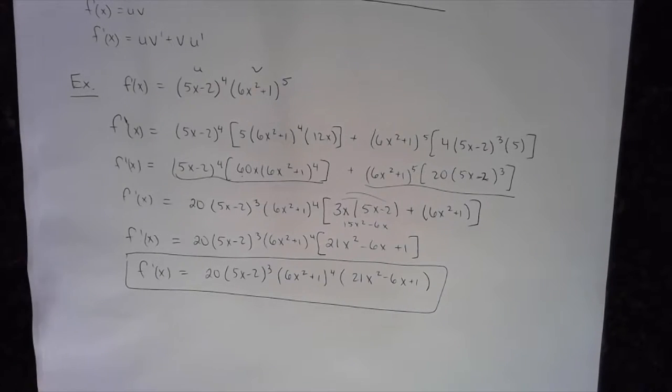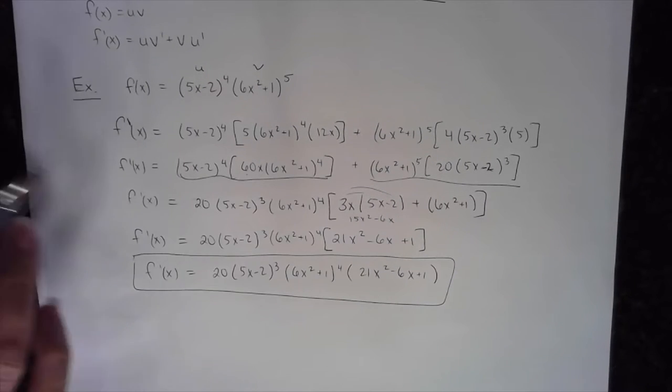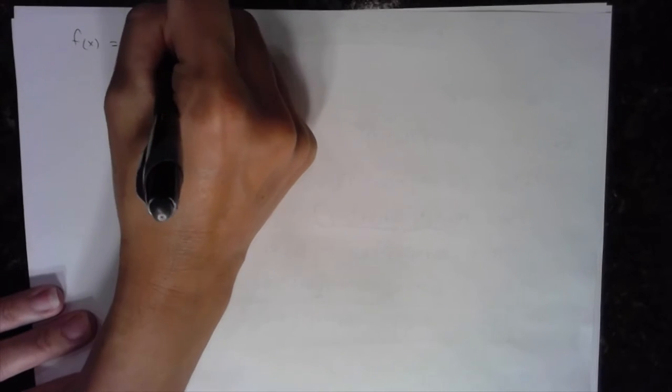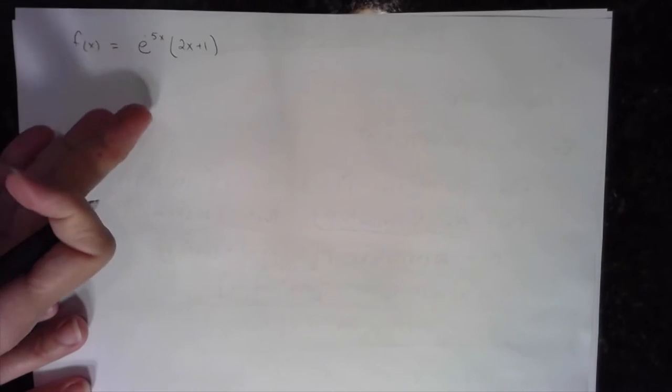This is a situation where you need the product rule, and you need to know your GCF thoroughly to simplify your first derivative. Now I'm going to do one more example. This one is going to have an exponential situation — for more advanced cases, check out my next product rule video, Product Rule 4. But just to introduce this: let's say I have e^(5x) times (2x + 1). This is a function — a product of two functions.